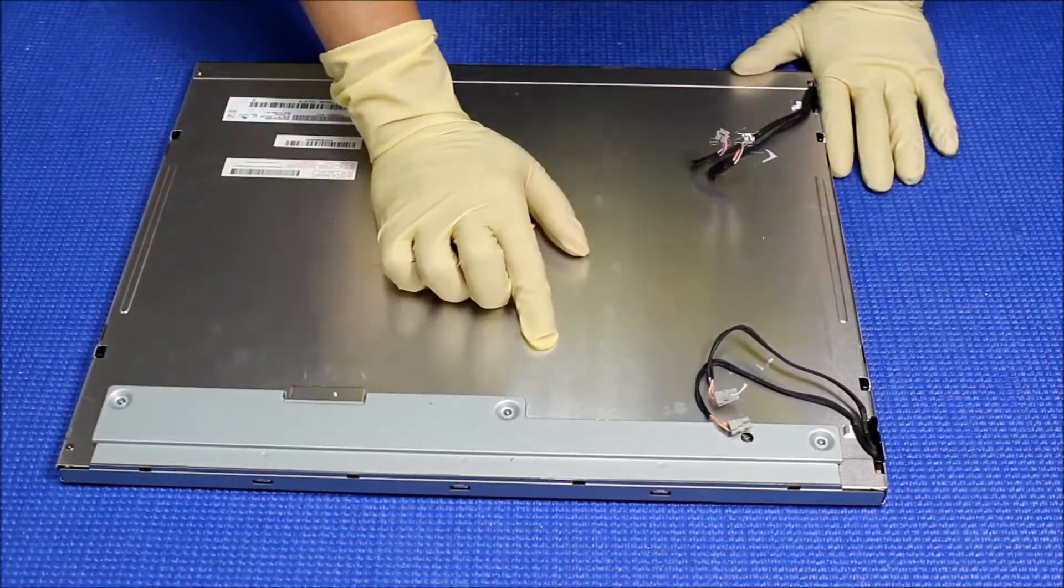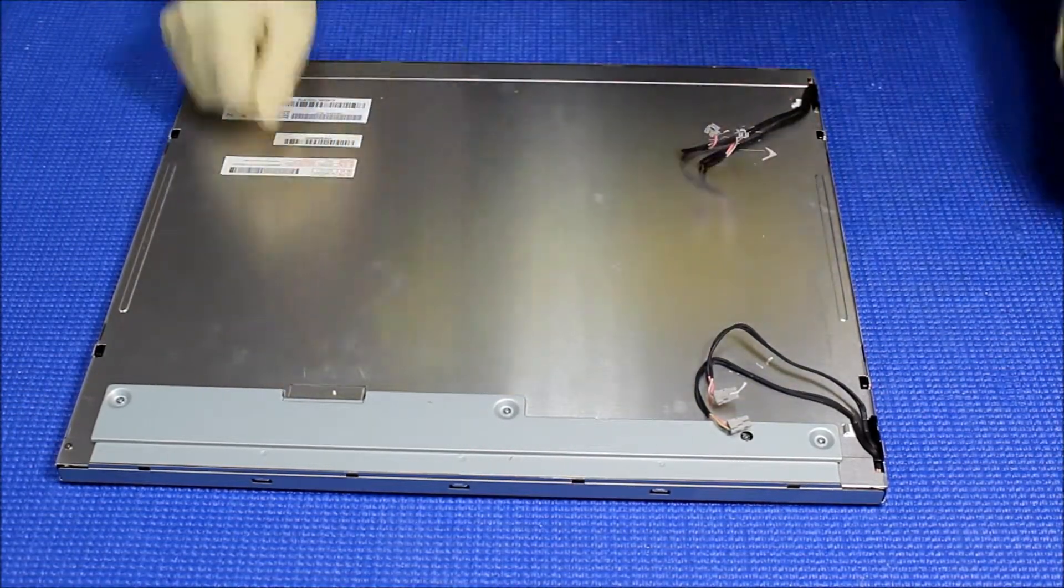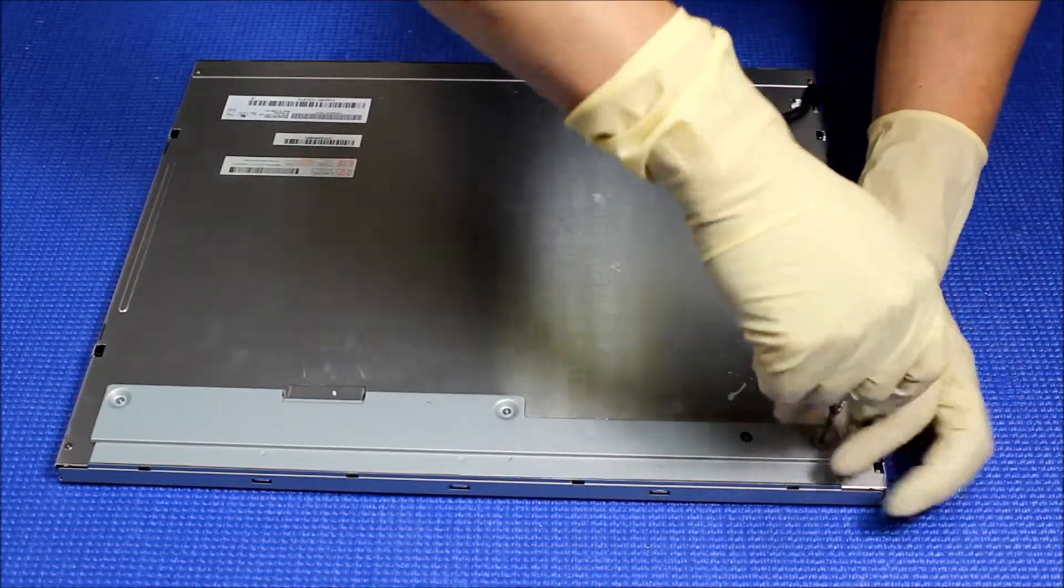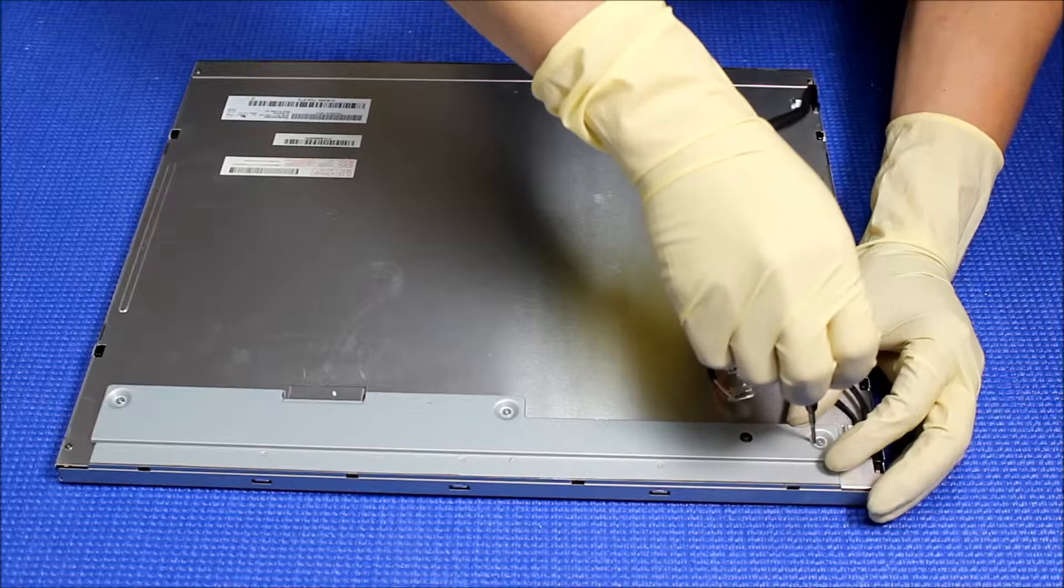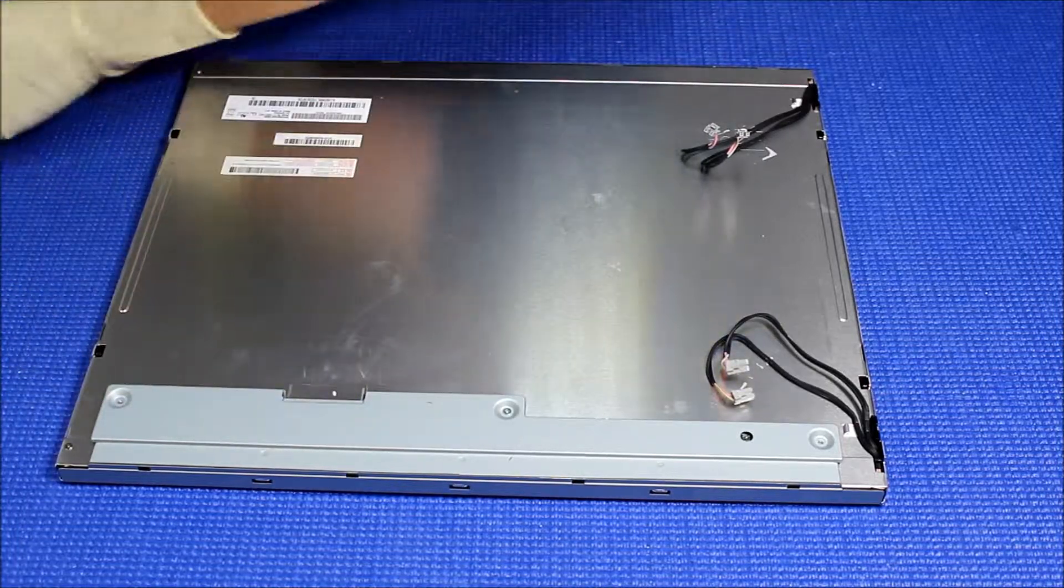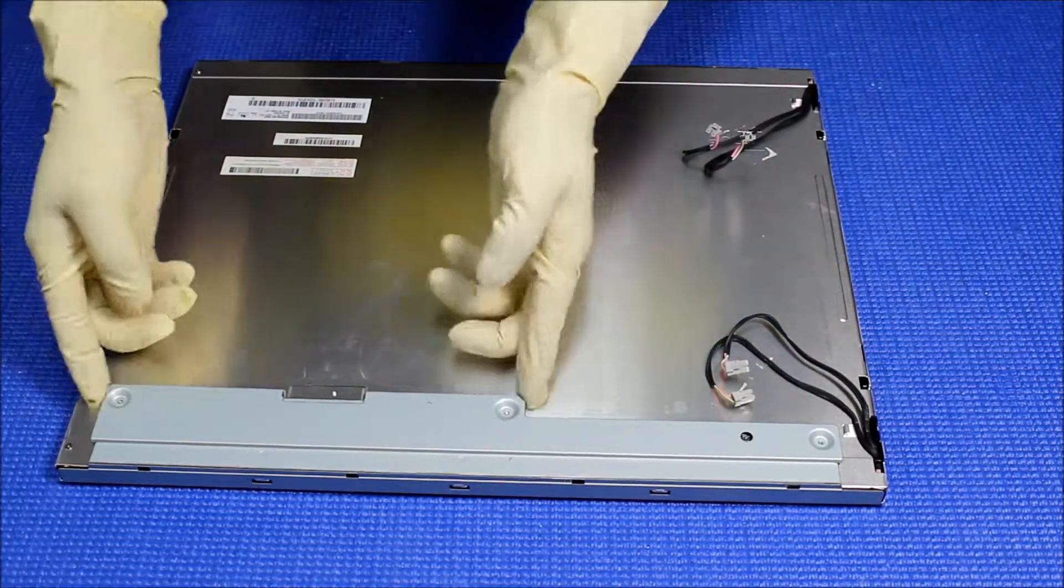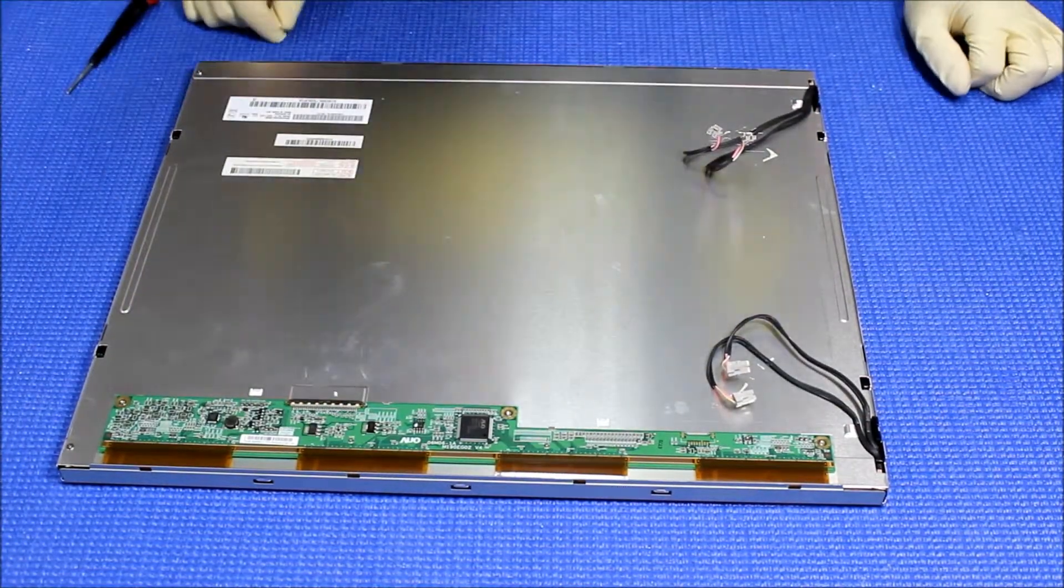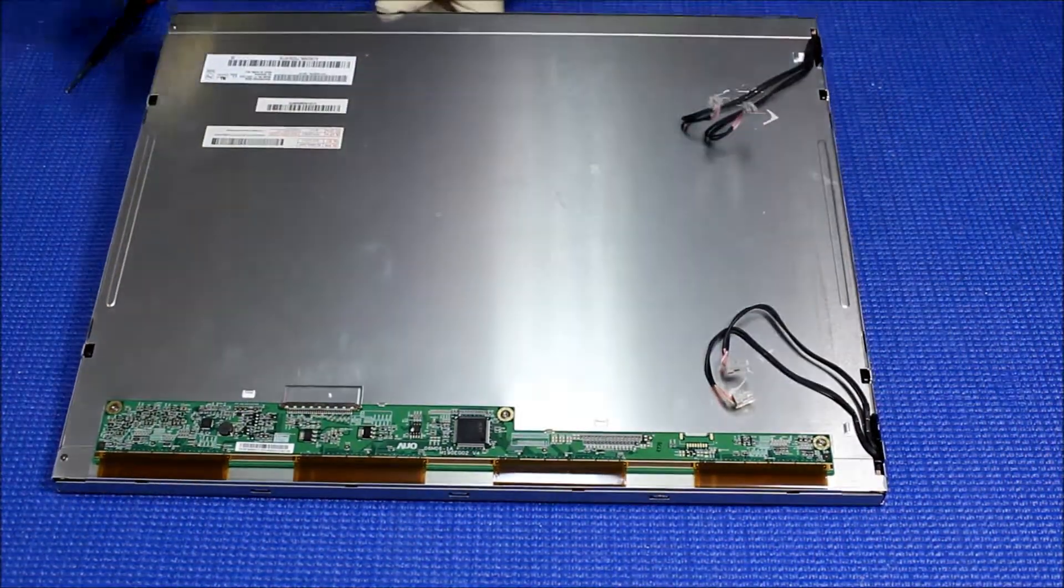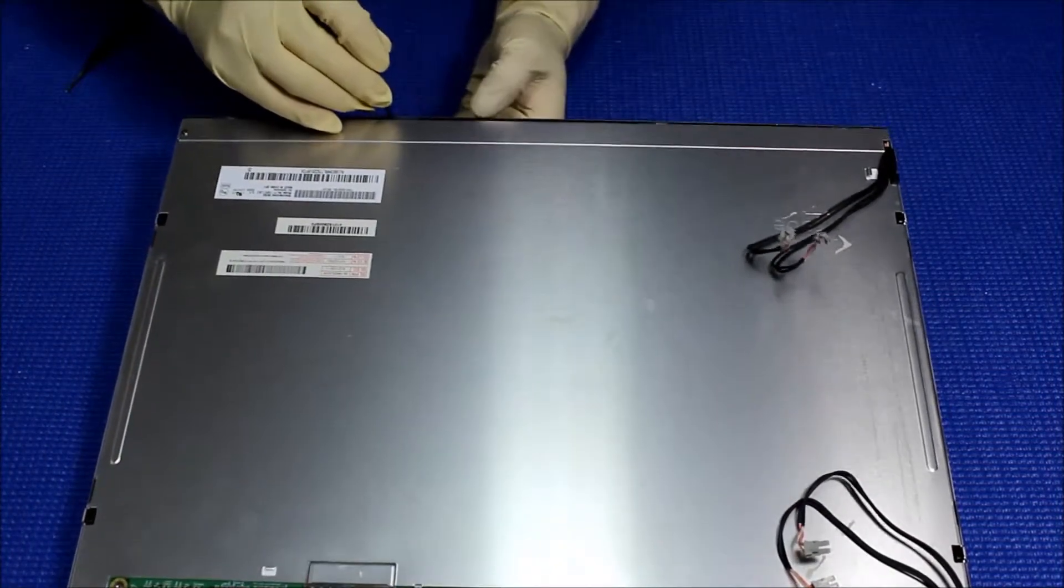So in order to upgrade to LED, we pretty much have to take everything out, disassemble everything. First thing we need to do is remove this metal frame. Just do one side at a time, there's no screw holding it until it comes out.